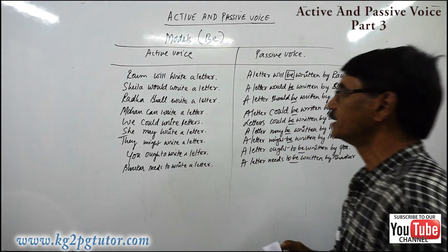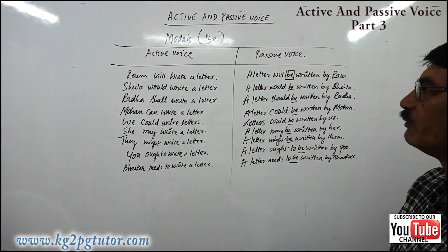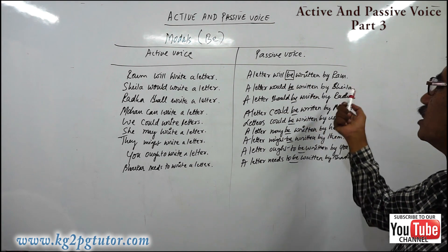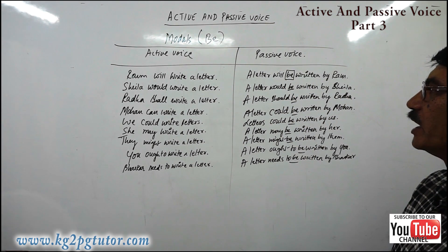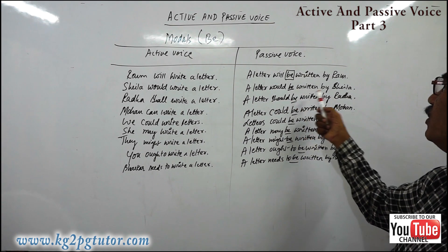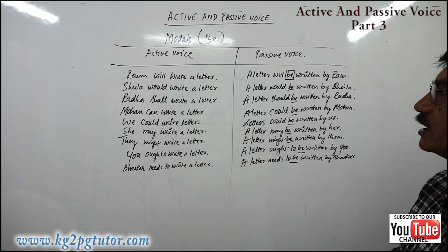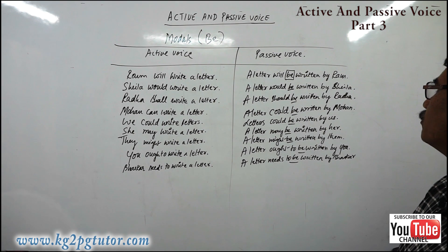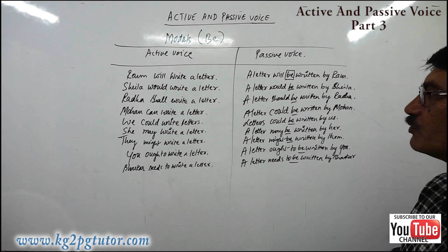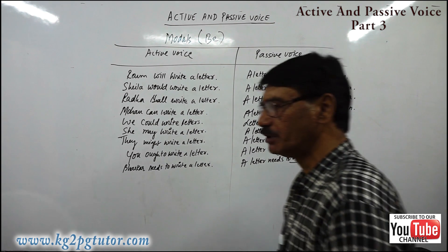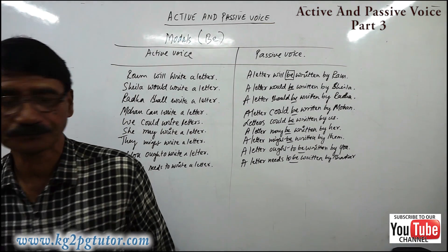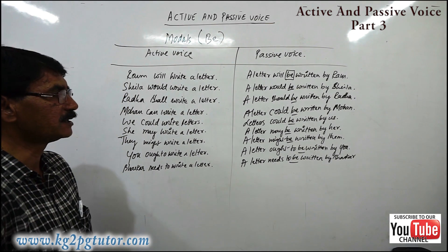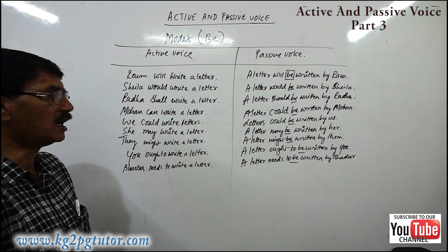Ram will write a letter. A letter will be written by Ram. Sheila would write a letter. A letter would be written by Sheila. Radha shall write a letter. A letter shall be written by Radha. Mohan can write a letter. A letter can be written by Mohan. We could write letters. Letters could be written by us.